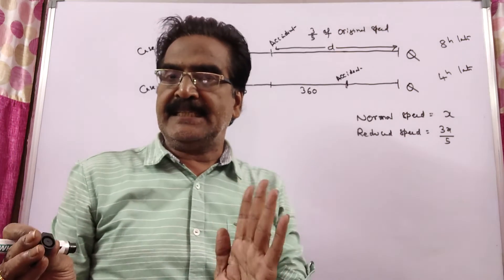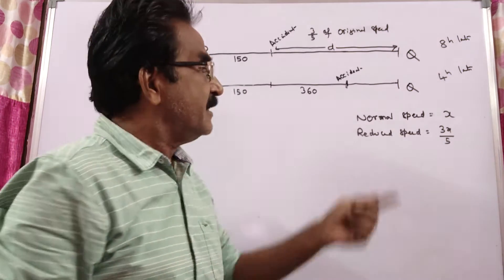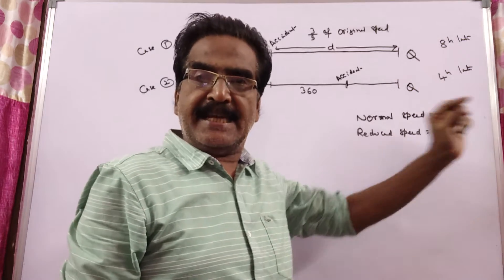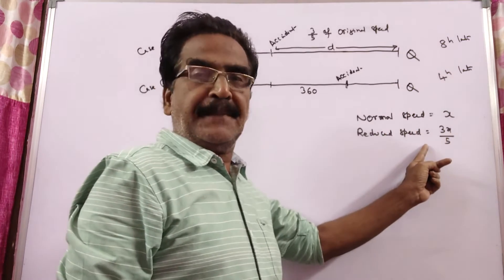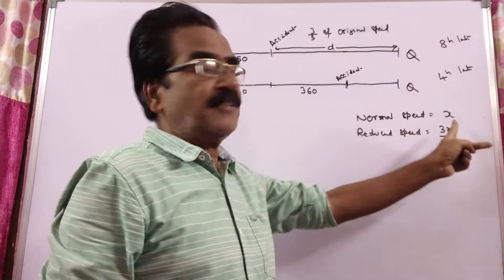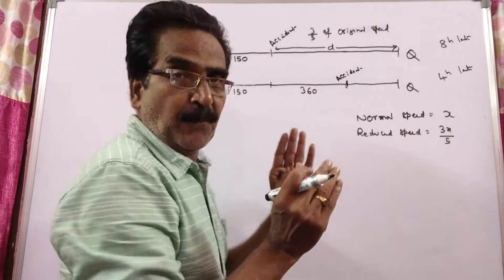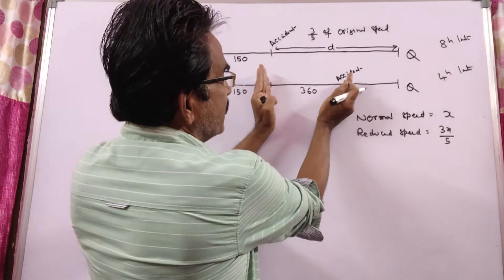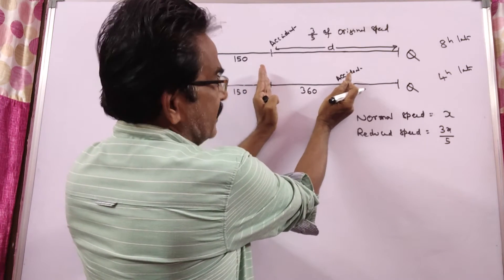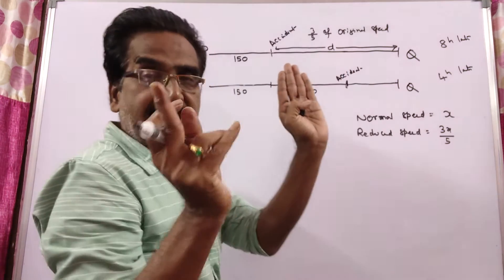Say normal speed of the train is x and reduced speed is 3x/5. Friends, look at this point, this 360 km. In the second case, this 360 km is travelled at normal speed because the accident occurred at this point.